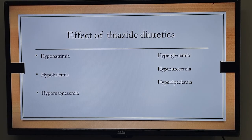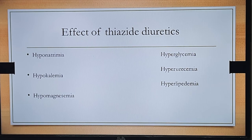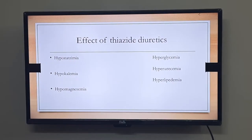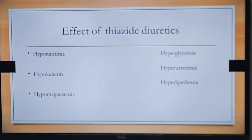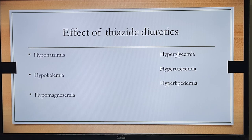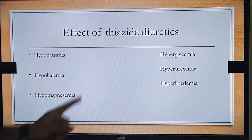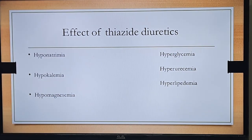Moving on to the important adverse effects of thiazide diuretic agents. The first is hyponatremia — because it promotes loss of sodium in the urine, sodium concentration in the blood decreases. The second is hypokalemia — due to potassium loss. The third is hypomagnesemia — due to magnesium loss.